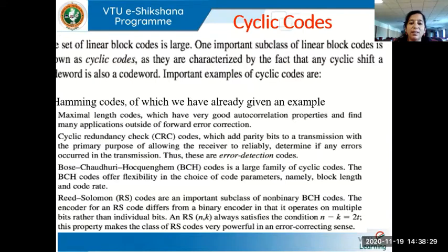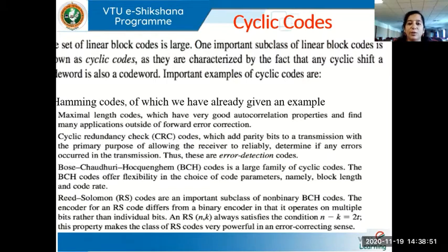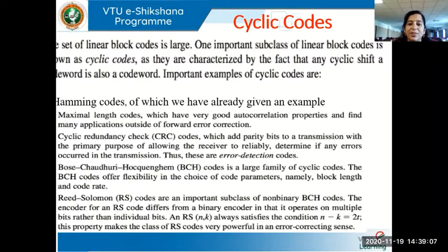When we study computer networks, we study a layered architecture. The second layer is known as the data link layer, and that layer adds a CRC or cyclic redundancy check to every unit of data going through the network. That code is verified at the receiver: it is recomputed, and if the result matches what was sent, there is no error. That's how they decide whether there was an error in transmission.